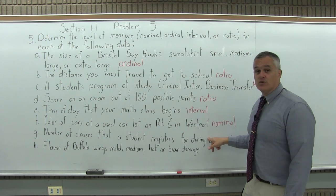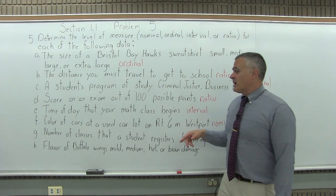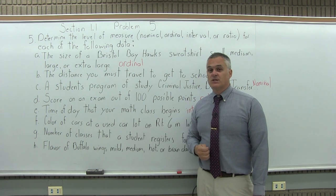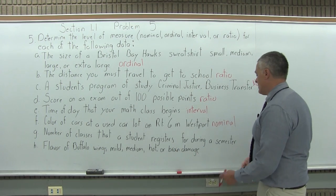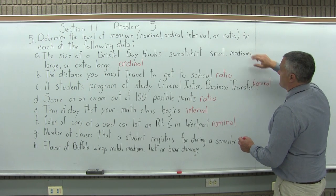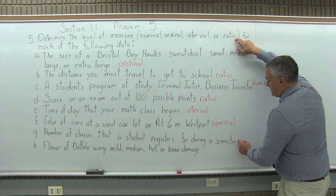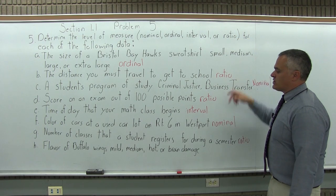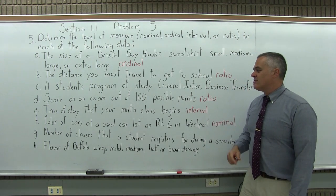Well, one student might register for two classes. Another student might register for four classes. Four is twice as big as two. Does it measure twice as much of something? Yes. Twice as many classes. So you have numbers that have a sensible ratio. So the number of classes you register for in a semester is a ratio level of measure.